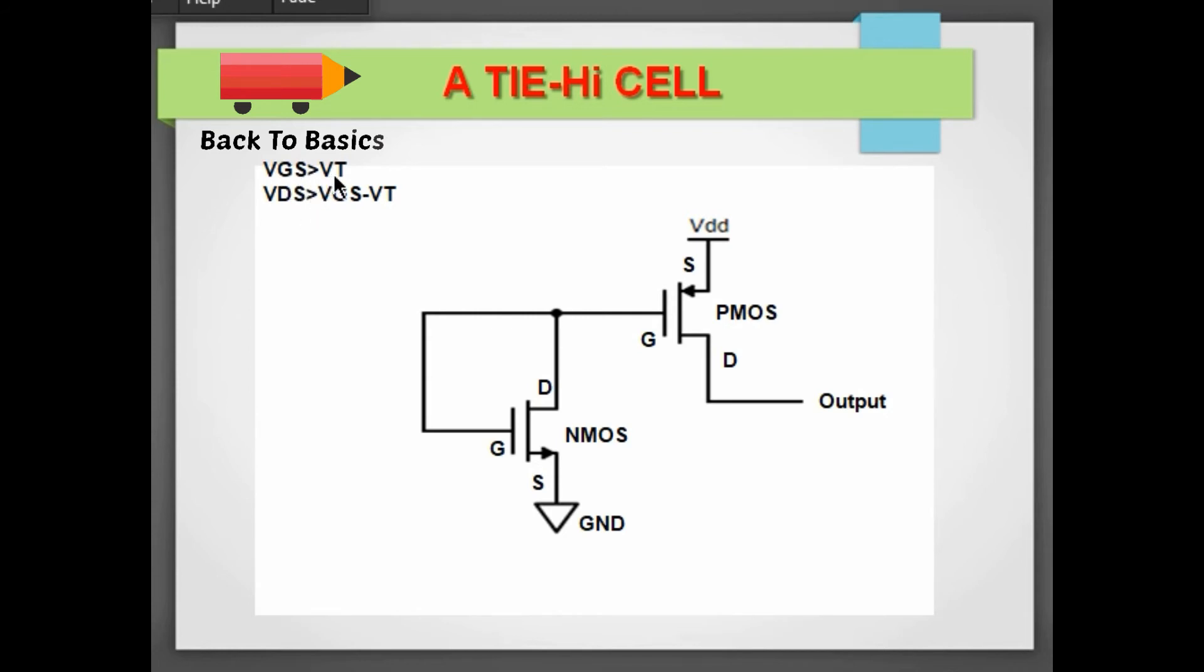And if the transistor is in on condition, then the first equation is always true. Like VGS, if VGS is less than VT it means the NMOS is in cutoff mode. So if VGS is greater than VT, then it means the transistor is on. Now for the second equation, VD is greater than VGS minus VT.